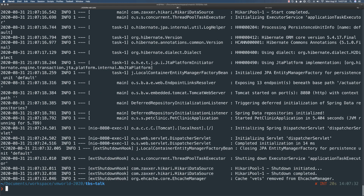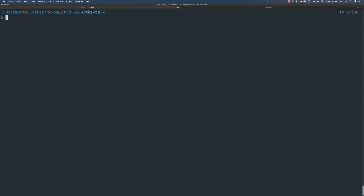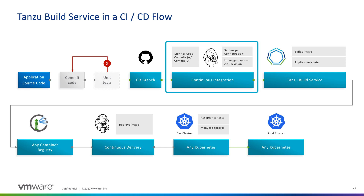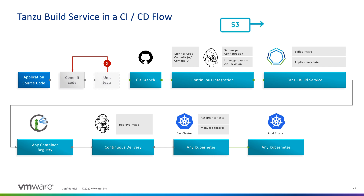Seeing Tanzu Build Service rebuild an image based on code changes gives you a good idea of what it does — it monitors different layers within the image for changes, and when a change is observed, it rebuilds the image. A quick note: I configured Tanzu Build Service to watch for updates to a code repo directly, but this likely would not be configured this way in a production scenario, as it could conflict with a CI and automated testing workflow. For example, if your CI pipeline results in pushing a jar file to an object storage bucket, you could configure Tanzu Build Service to monitor that bucket instead. There are other monitoring options as well.